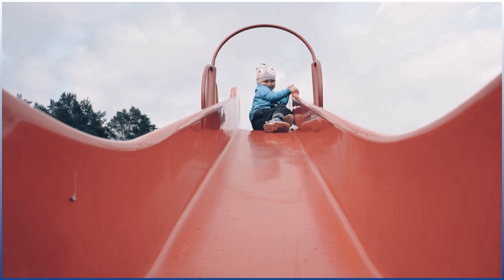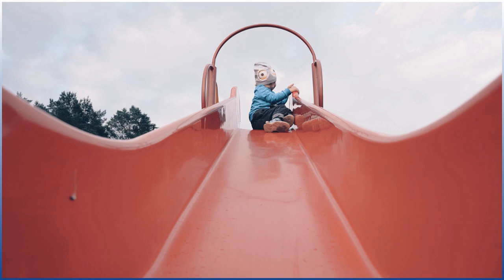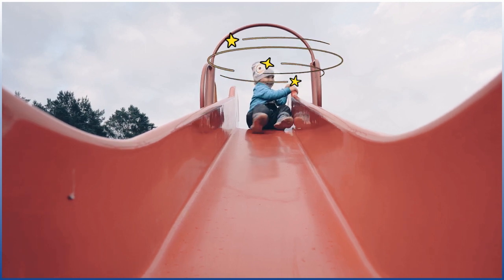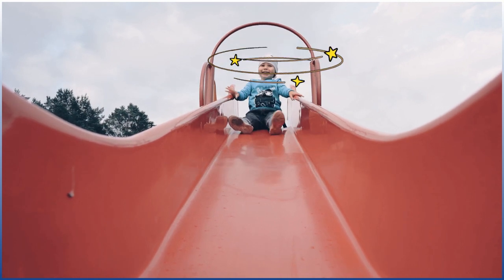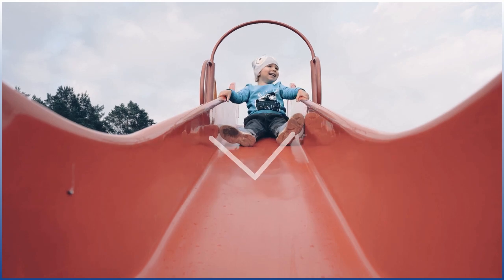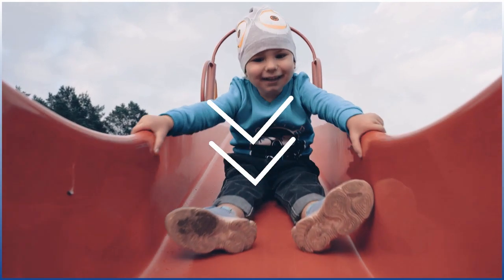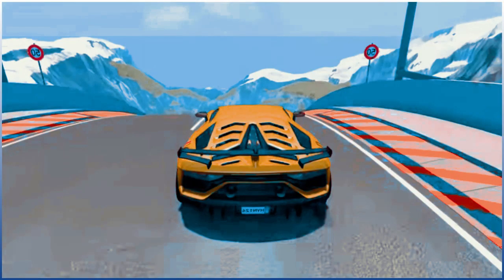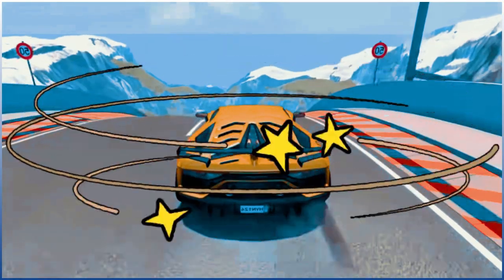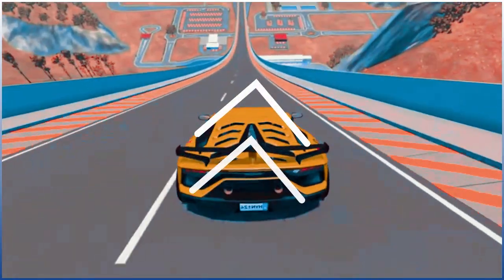Energy is transformed easily from one form into another. For example, a child at the top of a playground slide has potential energy. As the child moves down the slide, the potential energy is changed into kinetic energy. A car has potential energy when parked on a ramp and kinetic energy when it is moving down a ramp.